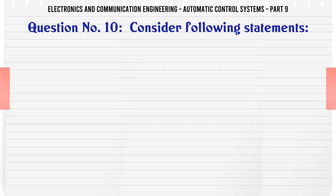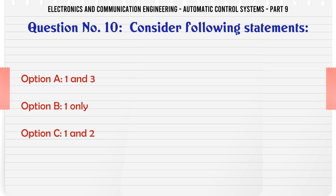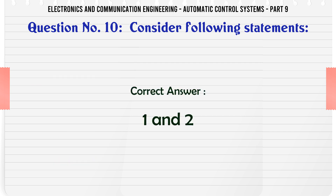Consider the following statements. Options: A. 1 and 3, B. 1 only, C. 1 and 2, D. 2 and 3. The correct answer is: 1 and 2.